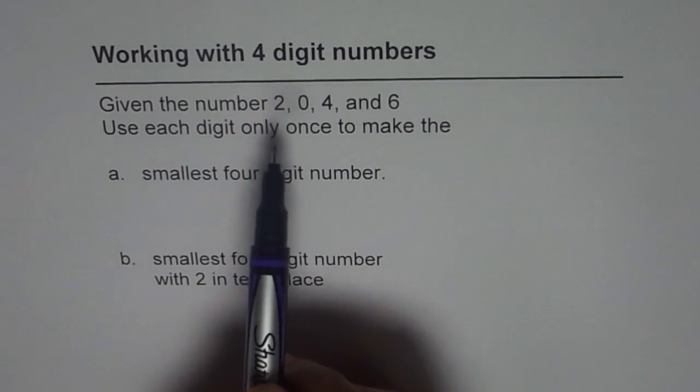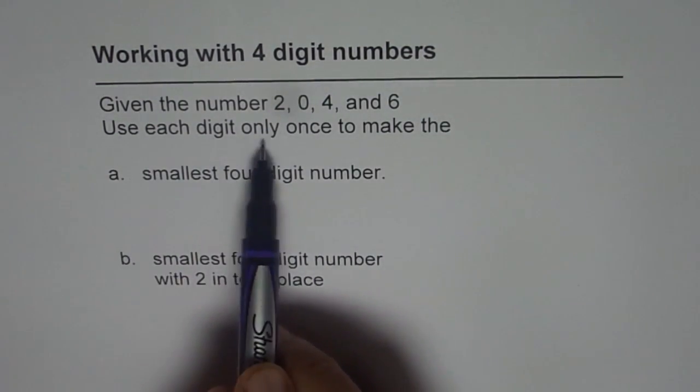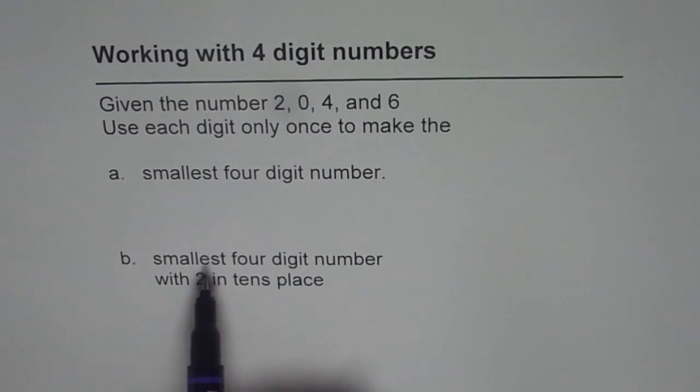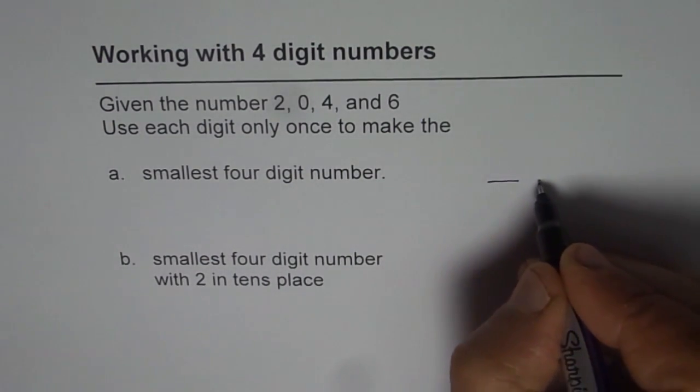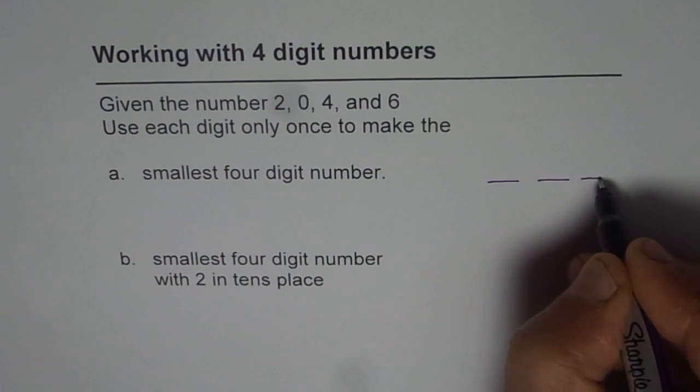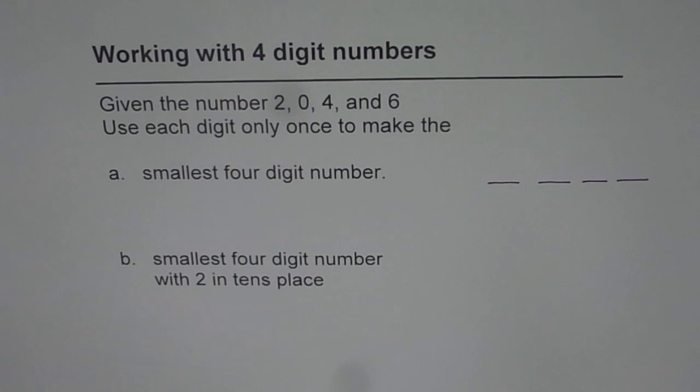So we are given four digits: 2, 0, 4, and 6. And we have to use each one of them only once and write smallest four digit number. Four digit means we will draw four spaces here and we will place our digits on these places to come up with the smallest four digit number.